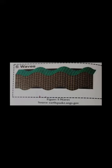S waves or secondary waves: an S wave (shear wave) is a seismic body wave that shakes the ground back and forth perpendicular to the direction the wave is moving. S waves arrive at the surface with some time lag after P waves. These waves can travel only through a solid medium. S waves vibrate perpendicular to the direction of the wave in the vertical plane, creating troughs and crests in the material through which they pass.